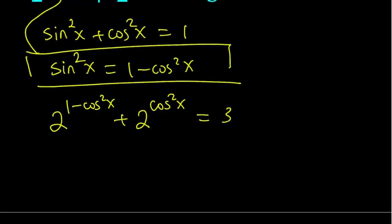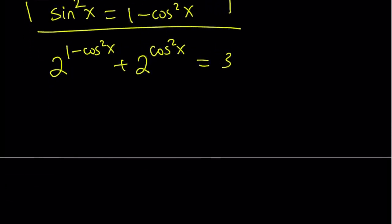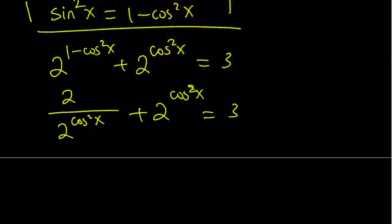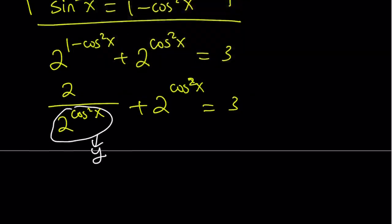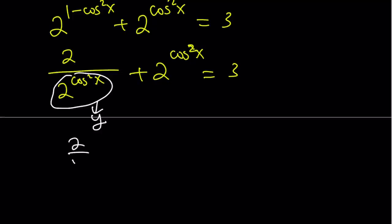Okay, great. So now we can go ahead and write the 2 to the power 1 minus cosine squared as 2 divided by 2 to the power cosine squared x. And this is just as is. Same one. And now notice that 2 to the power cosine squared x is repeating. So I can basically use substitution here. Let's go ahead and replace this with y. And hopefully you know why we're doing this.